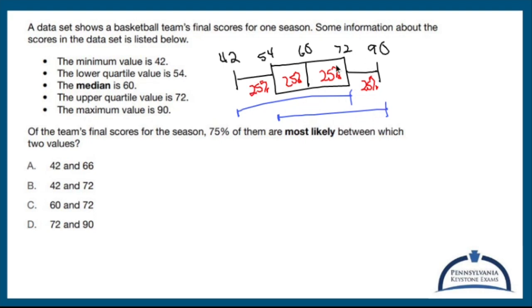There's no other way that you could say, for example, I have scores between 54 and 72. Well, that only accounts for 50% of your data. So, 42 and 72 and 54 and 90 are my only options.